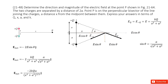So first, we can draw the electric field due to positive q. You can see for positive charges, the electric field will radiate radially outward in this way. So this is called E_q. And for the negative charge, the electric field is radially inward. So this is E_negative_q.